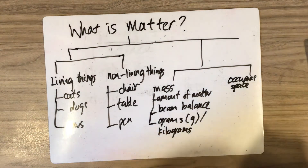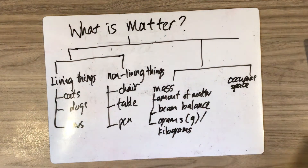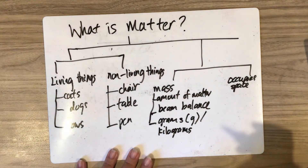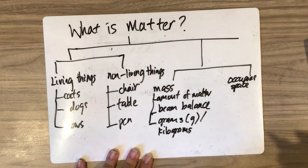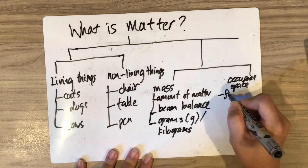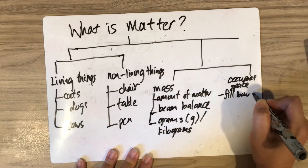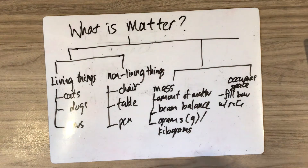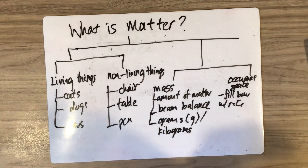Mass occupies space. Although we cannot see air, air is a matter — it has mass and occupies space. For example, you fill up a bowl with rice until it has no space for any more rice. The rice occupies space.